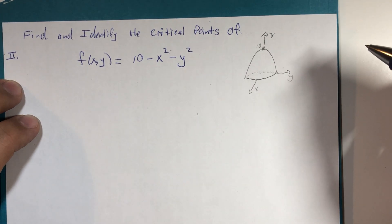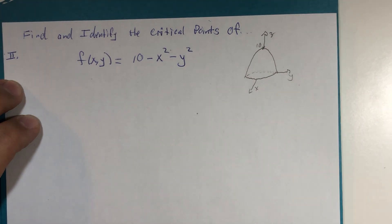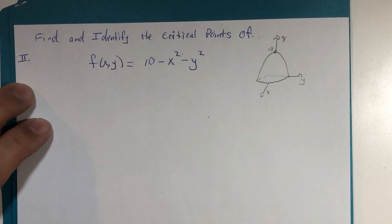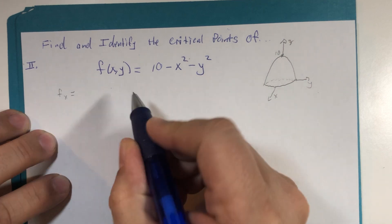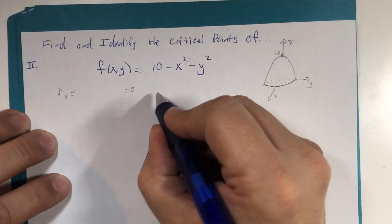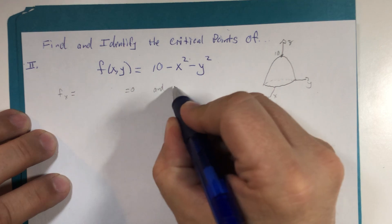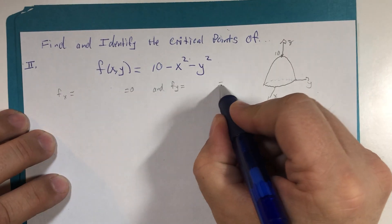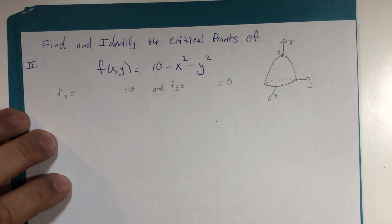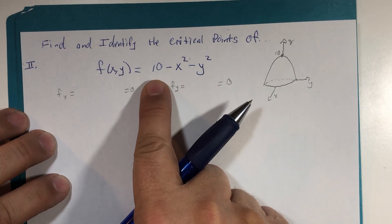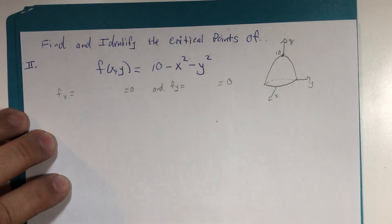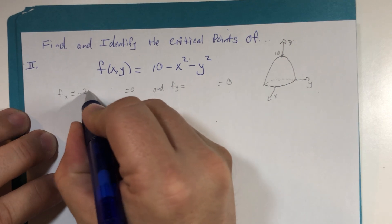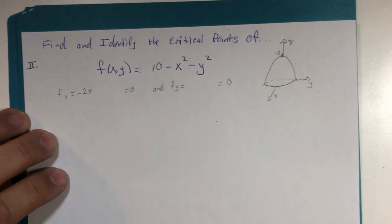So we're going to use the tools provided to try to verify this. So remember the first step for the critical points is that we need both the x derivative to be equal to zero, and we need the y derivative to be equal to zero simultaneously. So this isn't going to be too difficult. The first derivative with respect to x is negative 2x, and the first derivative with respect to y is negative 2y.